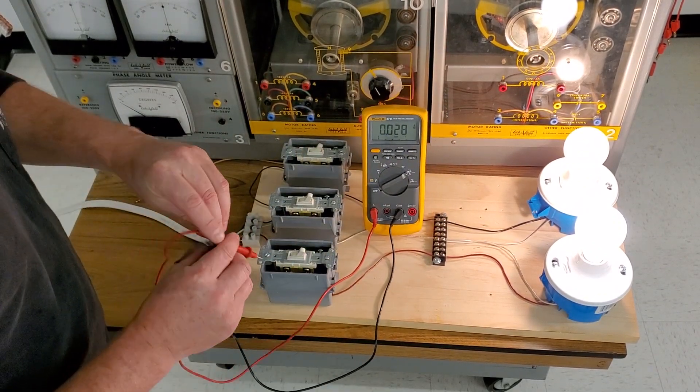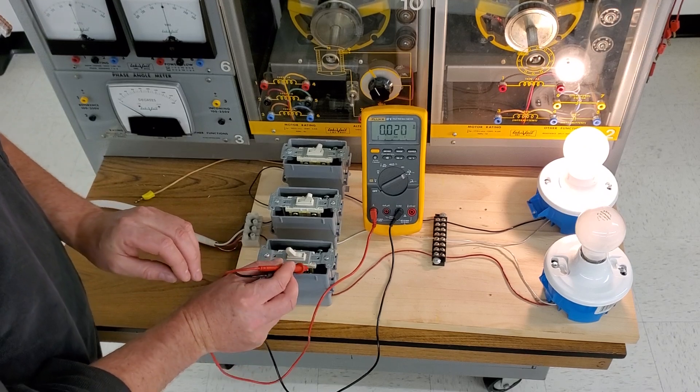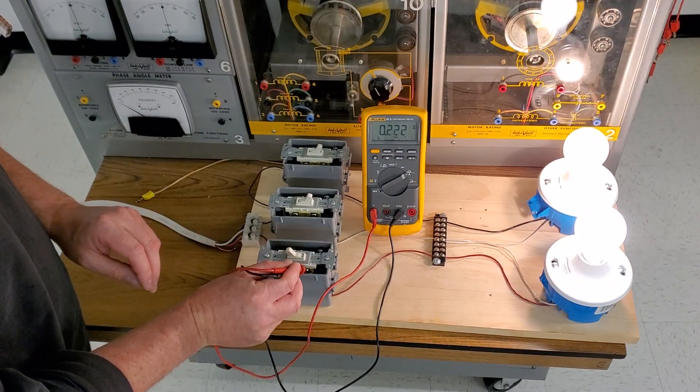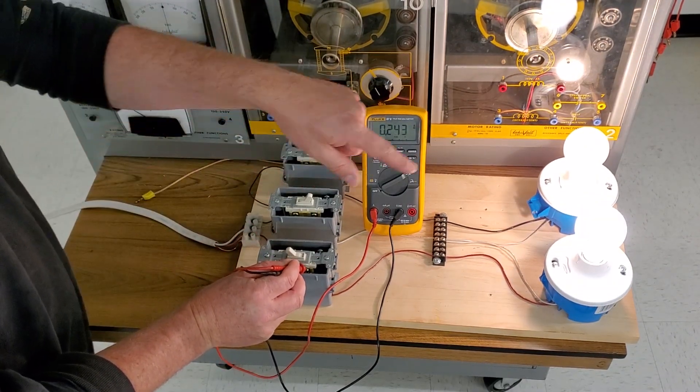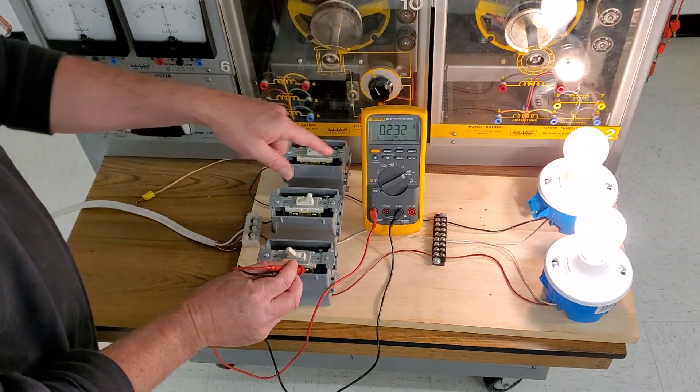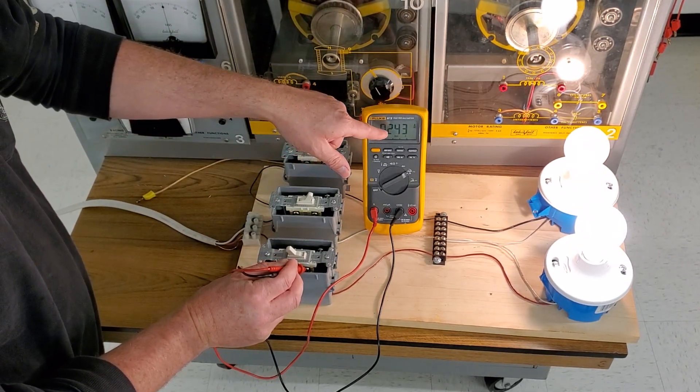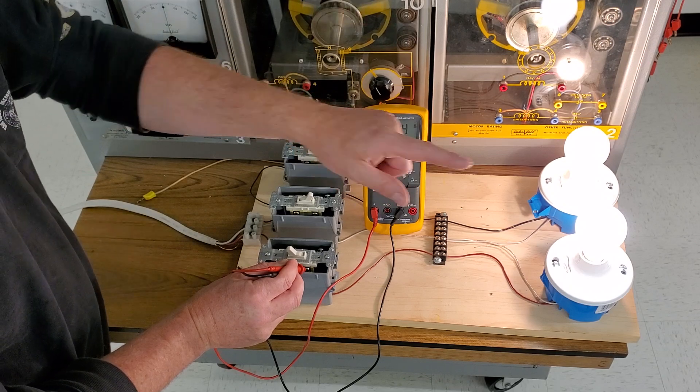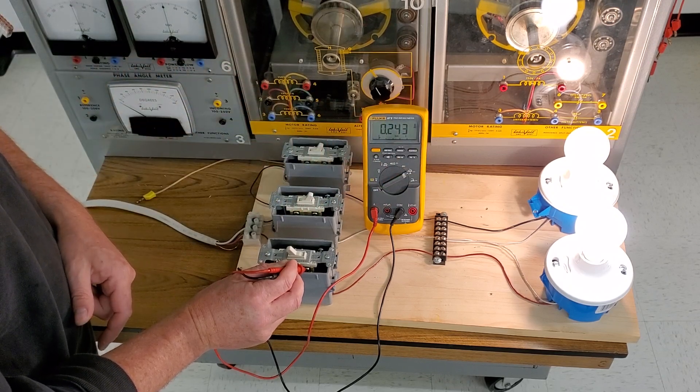So when I go between my two terminals, I complete the circuit, light bulb comes on, and now I'm reading the total circuit current, which is 0.24 amps of current in this circuit right here.